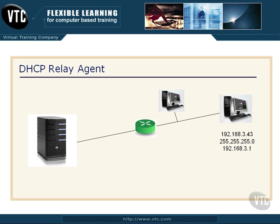Now the packet will pass through the router, and the server can respond directly to the client who sent out the broadcast, and it gets its information. The relay agent simply sits out there, intercepts the broadcast, and turns it into a direct address packet for that DHCP server. Sometimes the router itself can serve as a relay agent.